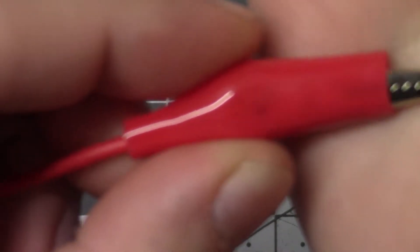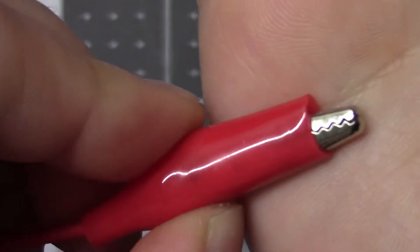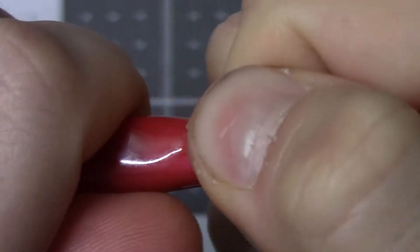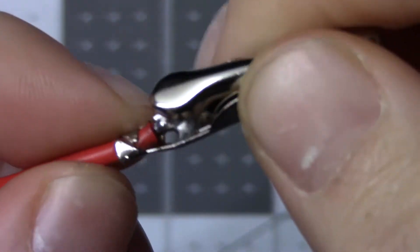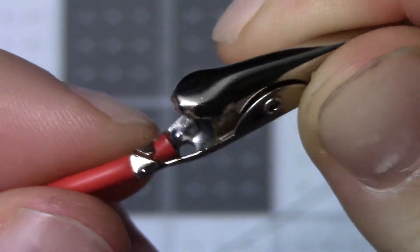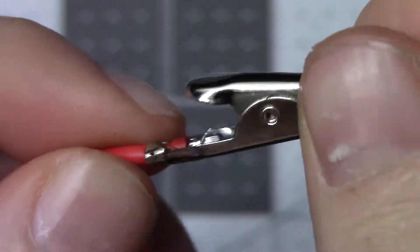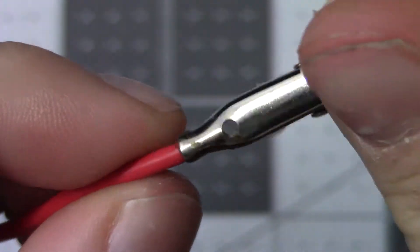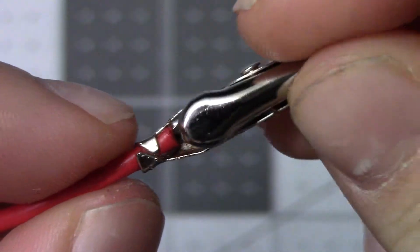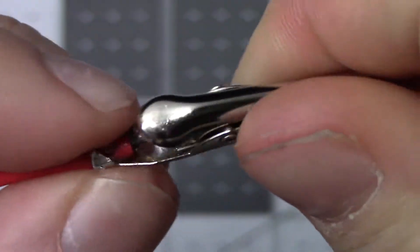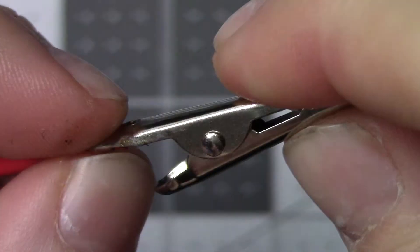If we take a closer look at the alligator clip ends, as you can see they shut real nice. Let's try to slide off the cover. Nice crimped. You can see the solder down there. Yeah, that is crimped good. These seem like some nice decent alligator clips.